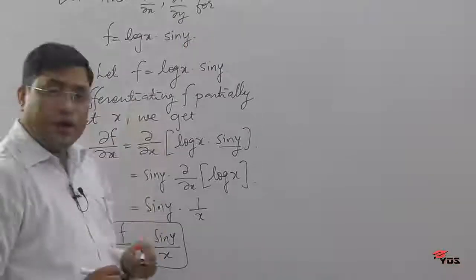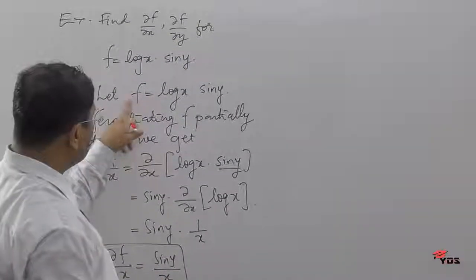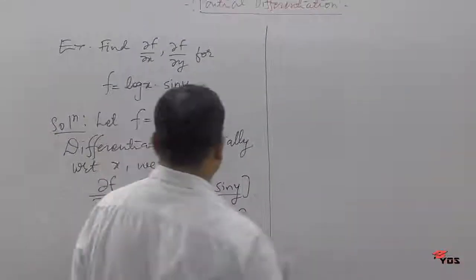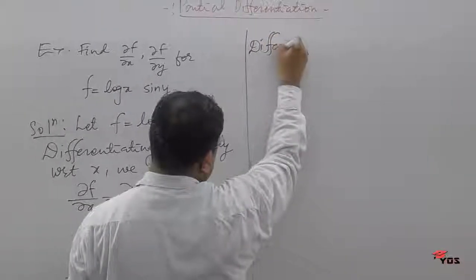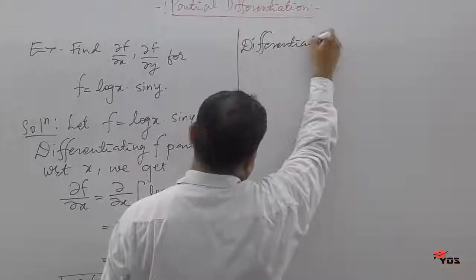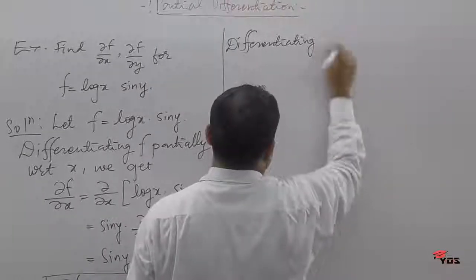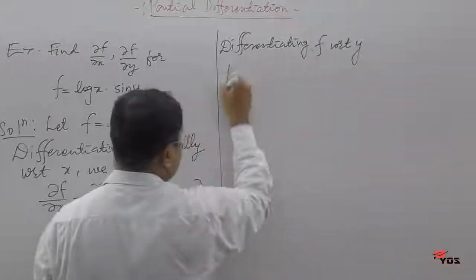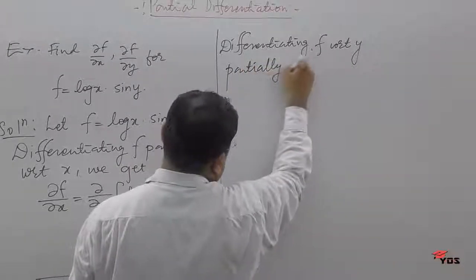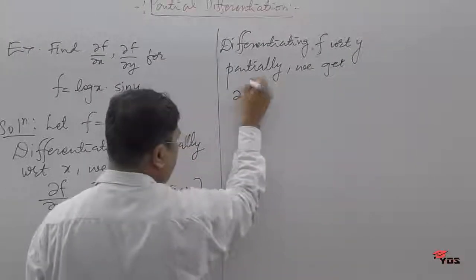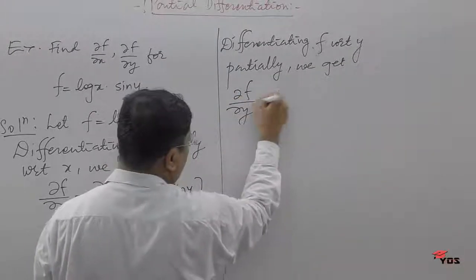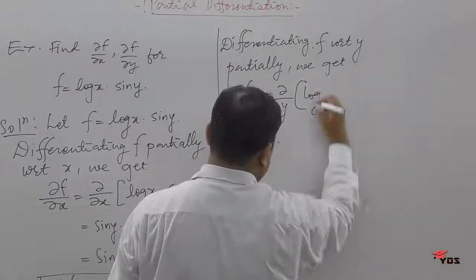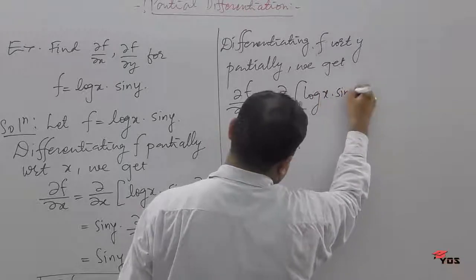Now we want ∂f/∂y, so we differentiate f with respect to y partially. Differentiating f partially with respect to y, we get ∂f/∂y equal to ∂/∂y of log(x) times sin(y).